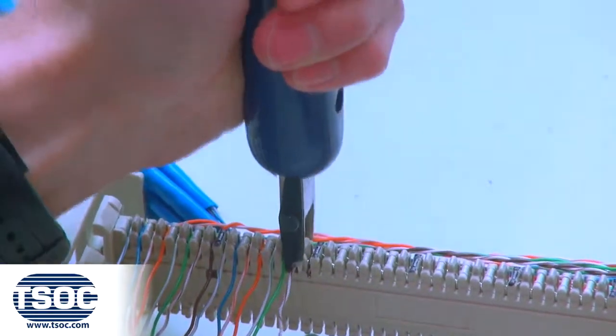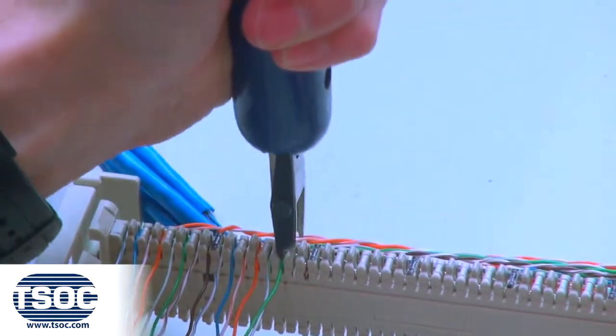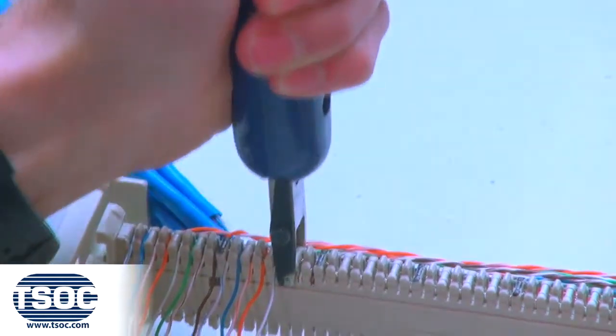Use the impact termination tool to punch down and cut one insulated conductor at a time.